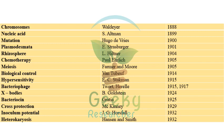'Mutation' by Hugo de Vries in 1900. 'Plasmodesmata' by Strasburger in 1901. 'Rhizosphere' by Hiltner in 1904. 'Chemotherapy' by Paul Ehrlich in 1905. 'Meiosis' by Farmer and Moore in 1905. 'Biological control' by Van Tubeuf in 1914. 'Hypersensitivity' by EC Stakman in 1915.